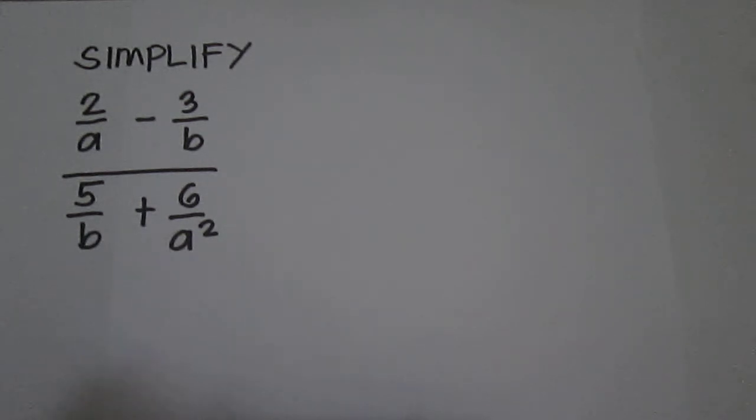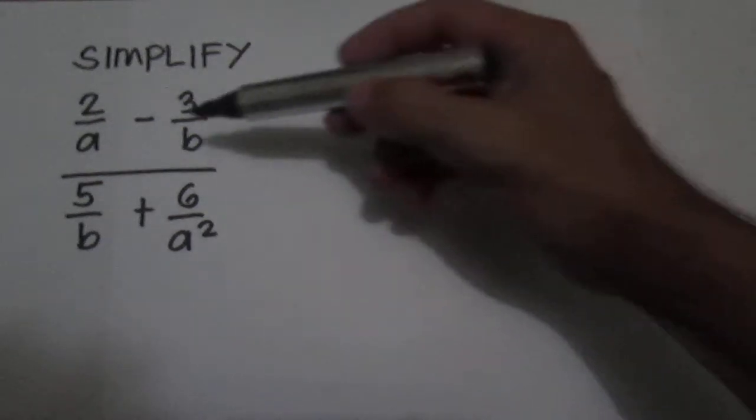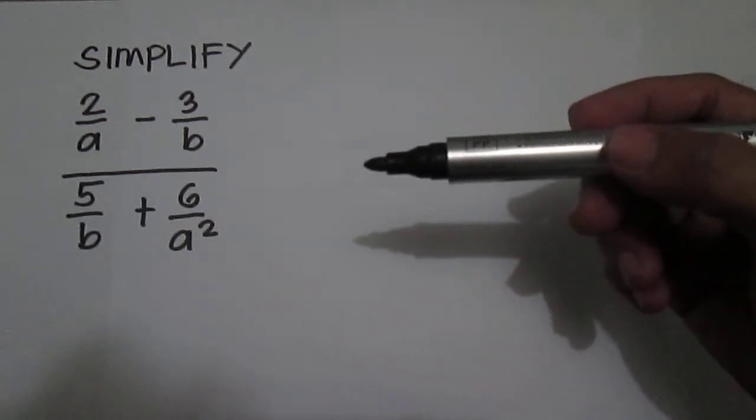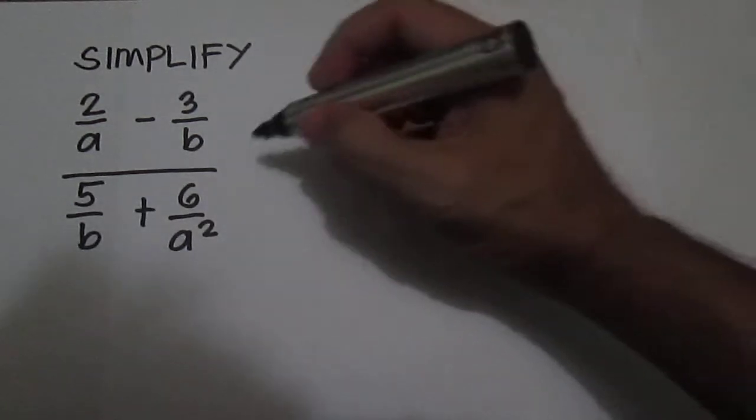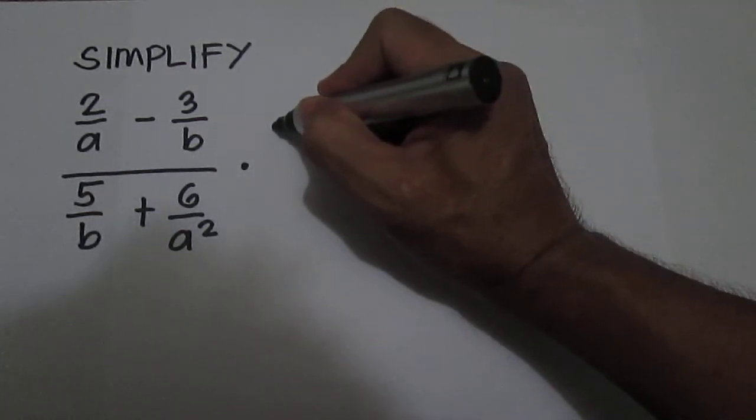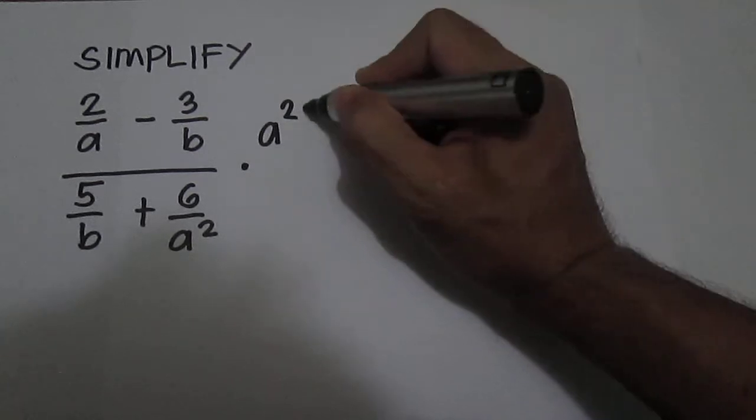To simplify, find the LCD of the denominators. The denominators are a, b, b, and a squared. The LCD here is a squared b.